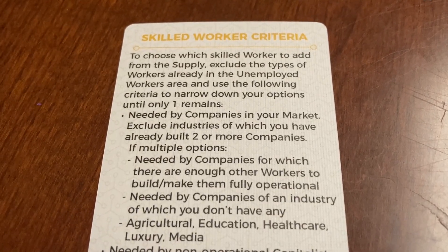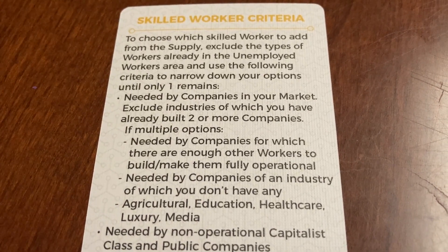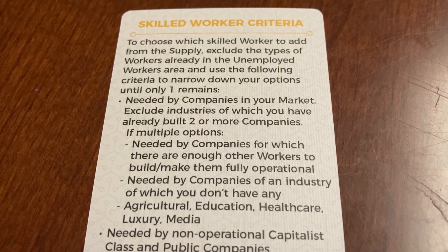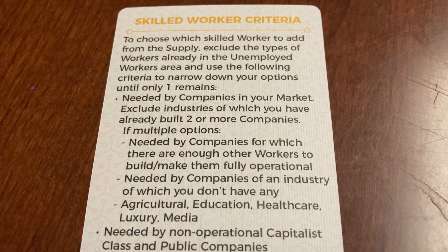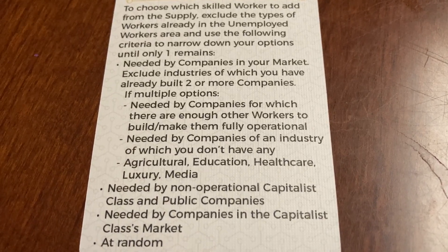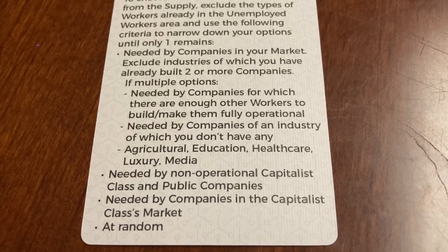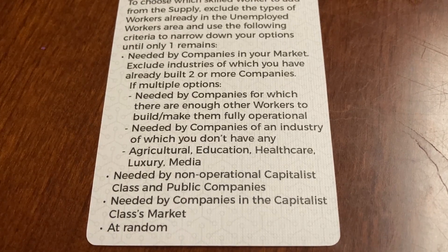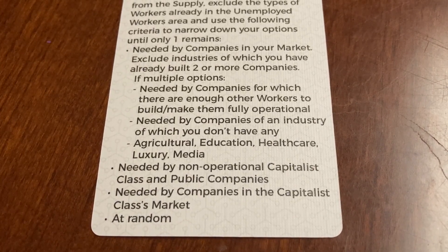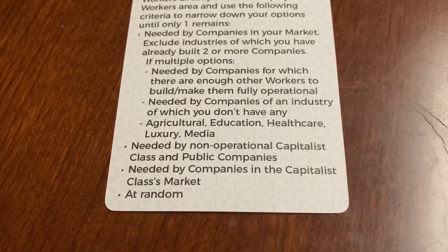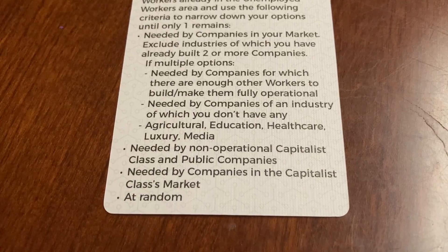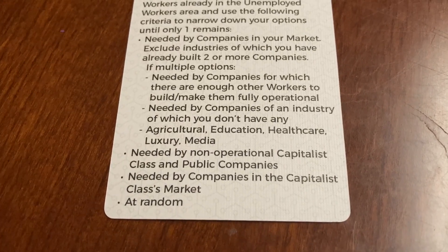When considering which skilled workers to add to the supply, prioritize: first, which ones are needed by companies in your market — since you have a limitation of two of each type of company, you can exclude types you already have two of. If you have more than one option, prioritize needs by companies for which there are enough other workers to make them operational. Then go to skilled workers needed by companies of an industry you don't have any of, prioritizing agriculture, education, healthcare, luxury, and media. From there, check which ones are needed by non-operational capitalist class and public companies, then capitalist class markets. If none of those criteria are met, choose at random.